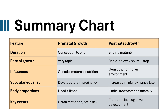Summary chart — Feature: prenatal growth vs. postnatal growth. Duration: conception to birth vs. birth to maturity. Rate of growth: very rapid vs. rapid/slow spurt/stop. Influences: genetic and maternal nutrition vs. genetics, hormones, and environment. Subcutaneous fat develops late in pregnancy, increases in infancy, and varies later. Body proportions: head and limbs — limbs grow faster postnatally. Key events: organ formation vs. brain development, motor, social, and cognitive development. Thank you for watching.